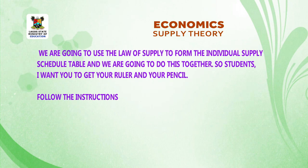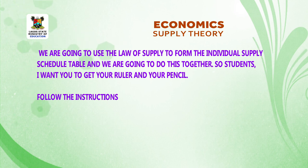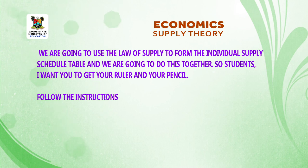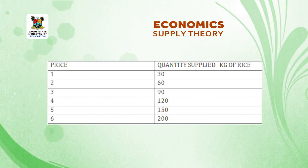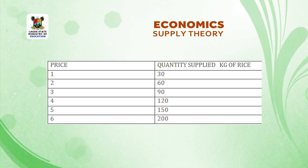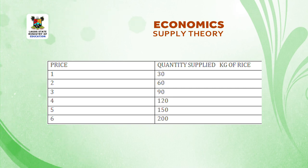We are going to use the law of supply to form an individual supply schedule table and we are going to do it together. Students, get your ruler and your pencil. Write 'Price' in one column, then rule and write 'Quantity Supplied (kg of rice)'. In the price column, we are going to use prices one to six.